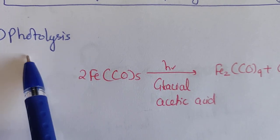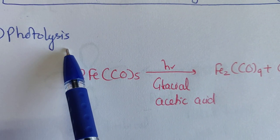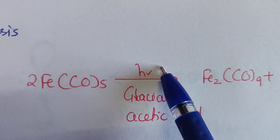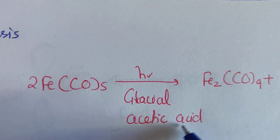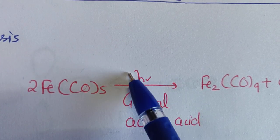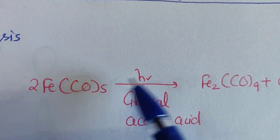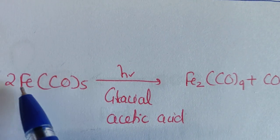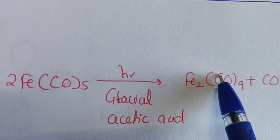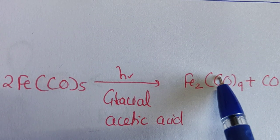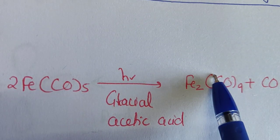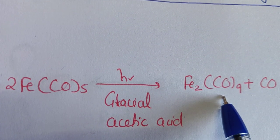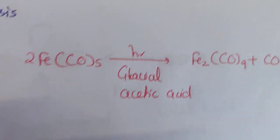The third method for preparing polynuclear carbonyls is photolysis. In this method, mononuclear carbonyls are subjected to photolysis — using photons (UV light) in the presence of glacial acetic acid — which converts mononuclear carbonyls into dinuclear or polynuclear carbonyls.